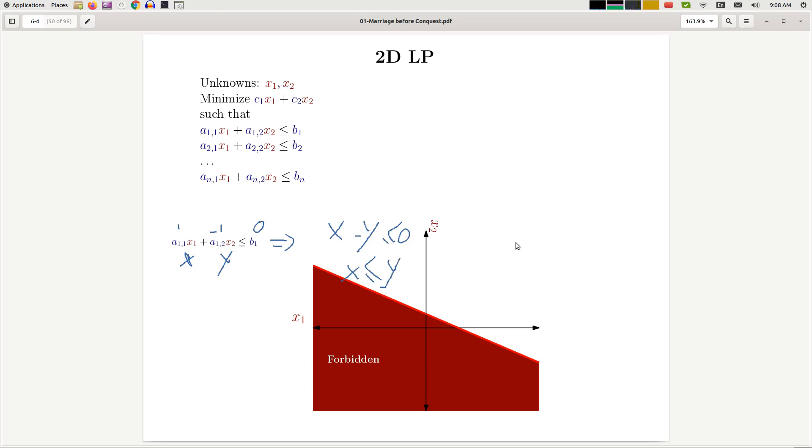Therefore, the forbidden case is when x is bigger than y. If I draw the coordinate system, which subset of the plane has this property? It's going to be, draw the line through the origin—it goes like this. And in this half, x is larger than y, so that is forbidden.